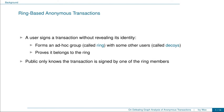Our work is about ring-based anonymous transactions. In a ring-based anonymous transaction, a user signs a transaction without revealing their identity. This is done by forming an ad hoc group with some other users and proving that the signer belongs to the group. This group is also called a ring, and those other users in the ring are called the decoys. The public only knows that the transaction is signed by one of the ring members, but they don't know who the actual signer is.